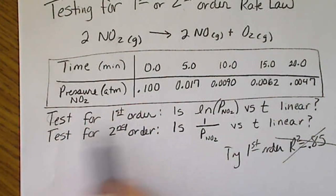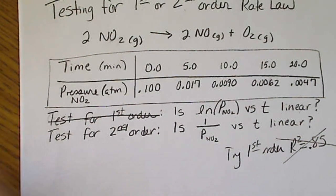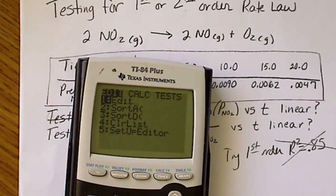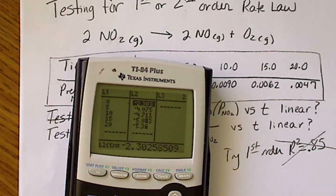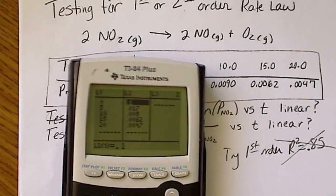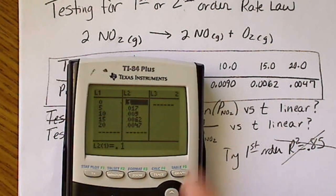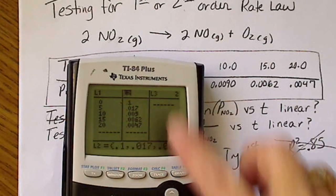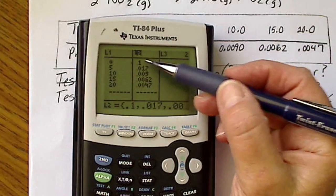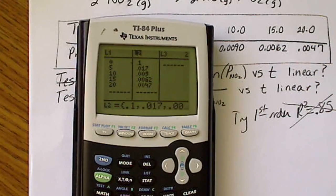To try for second order, I'll go back to my list and go to Edit. I'll take e to the power of each value in L2 to recover my original pressure data, and now I'm back at my original data. Then I'm going to hit the x⁻¹ key — the reciprocal — meaning I'll be taking 1 over each one of these data points.